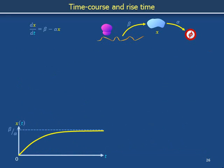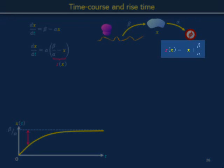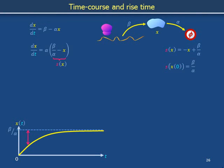We can supplement our graphical work analytically. Take the original differential equation and factor out the alpha on the right-hand side. Call the quantity in parentheses s on x. The difference between beta over alpha and x, meaning here s, is the height of the red arrow, which is the distance from the yellow curve to the dashed steady state line. The initial condition for s is s on x on 0 equals beta over alpha. If proteins were present at steady state level, s would be 0.